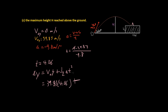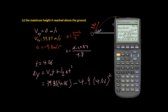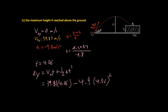Times t, which is 4.066, plus one half times a, which is just negative 4.9, times t squared — so 4.066 squared. Simplifying: 39.83 times 4.06 minus 4.9 times 4.06 squared gives you 81. So y is simply 81 meters — that is the maximum height.